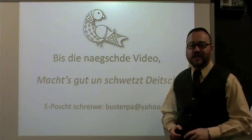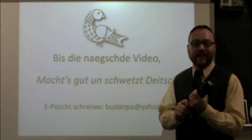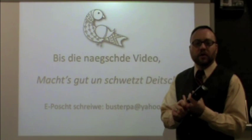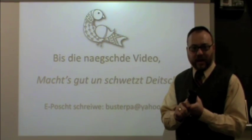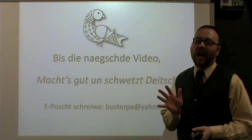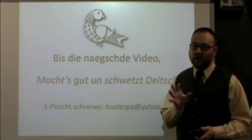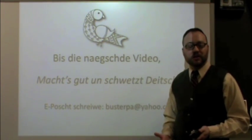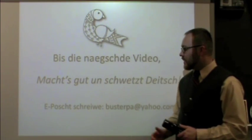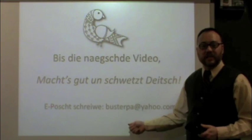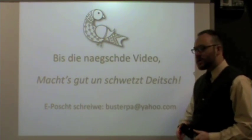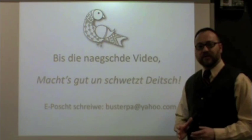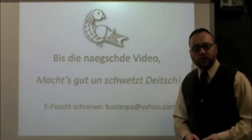That was the accusative case in a nutshell. We covered what the accusative case deals with: the direct object. We covered the definite article 'the,' indefinite articles 'a' and 'an,' the accusative personal pronouns, and the accusative prepositions — five mini topics under the accusative case. From this point on, any time you have a sentence with more than just a subject and a verb, you'll be using the accusative case. If you have questions, comments, or ideas for future videos, email me at BusterPA at Yahoo.com. That's it for this video — bis die nächste Mal. Mach's gut un schwätz Deitsch.